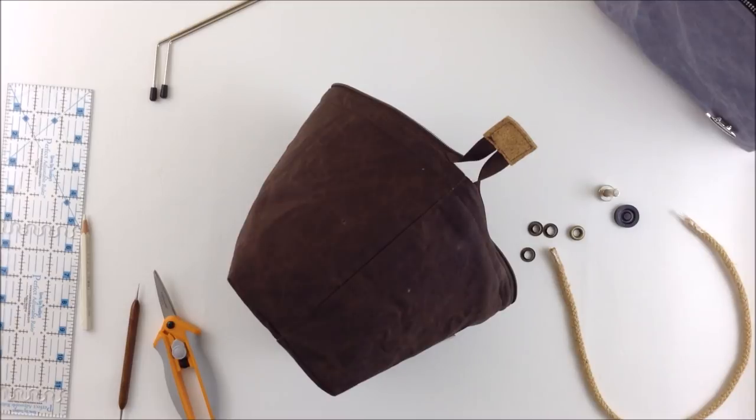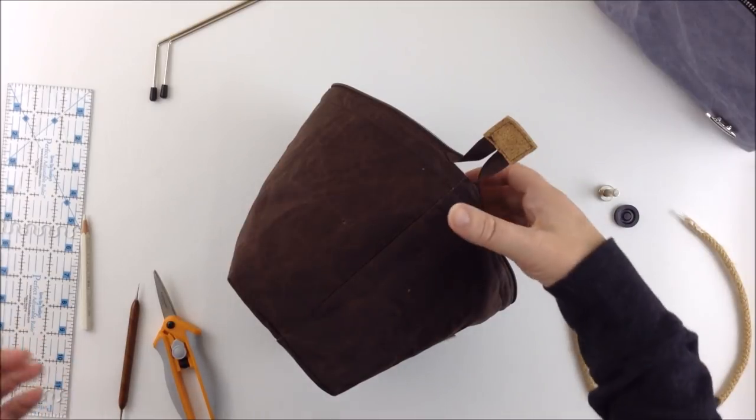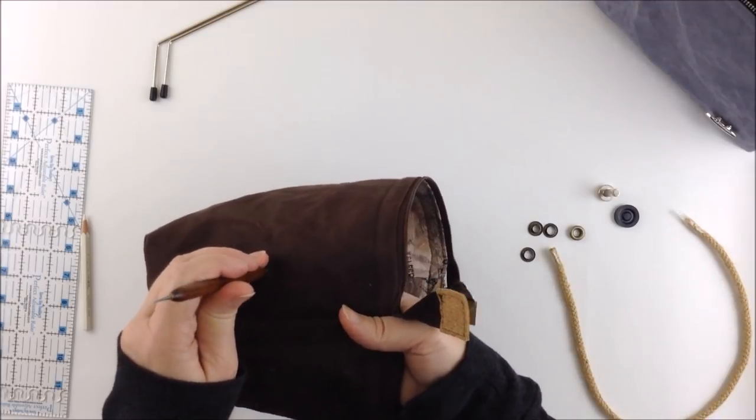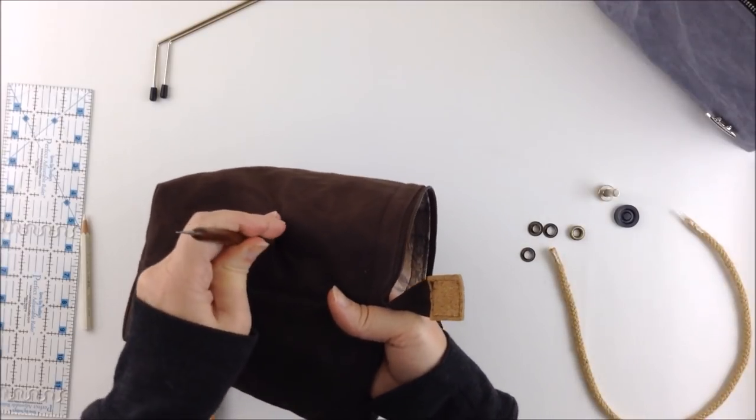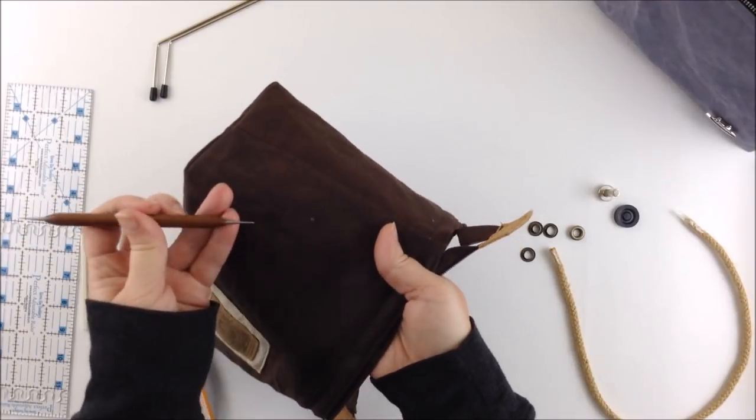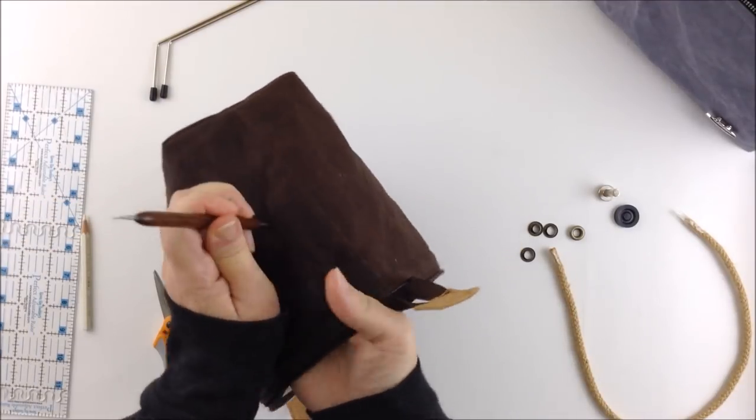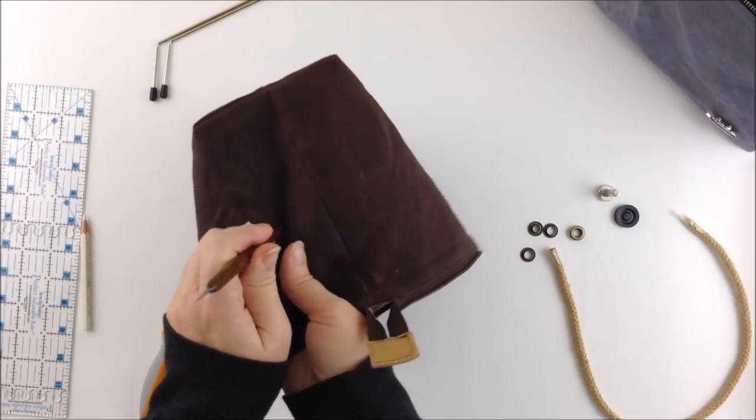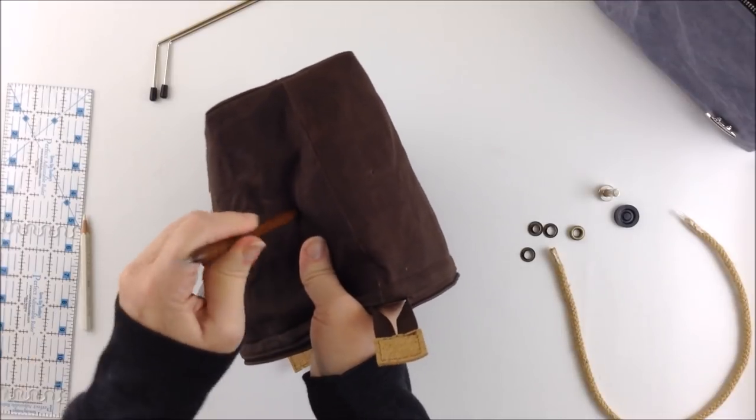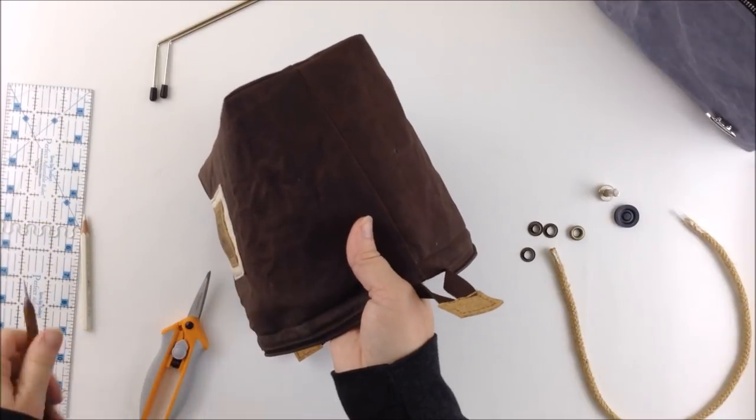Now you're going to make holes for your grommets or your eyelets whatever you call them. I start off with a small tool and make an initial hole. Then do the same on the other side. So that's got that started.